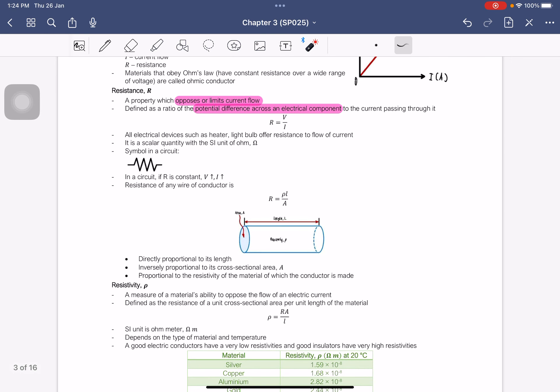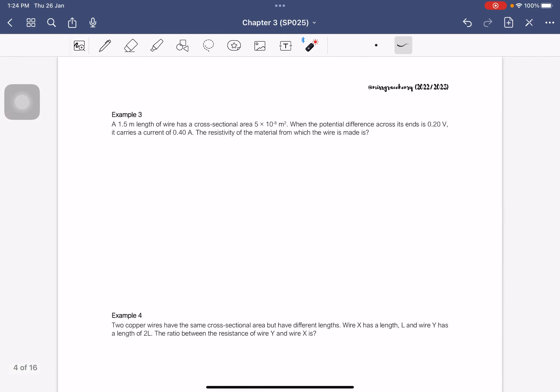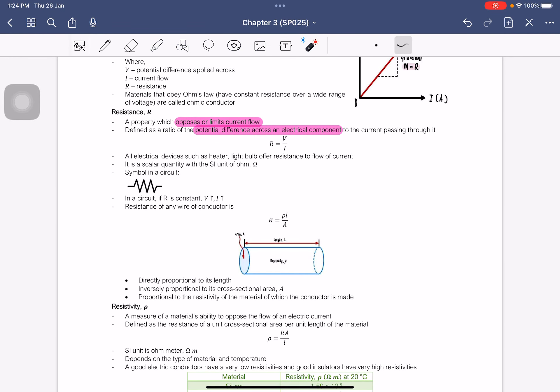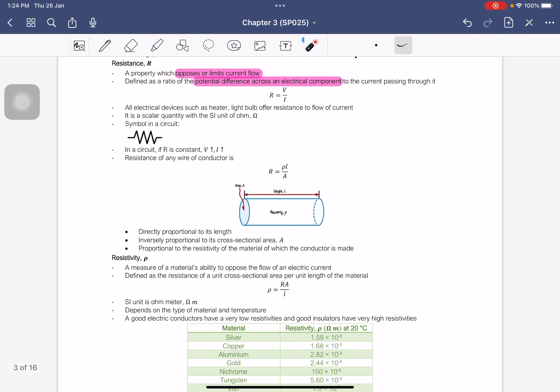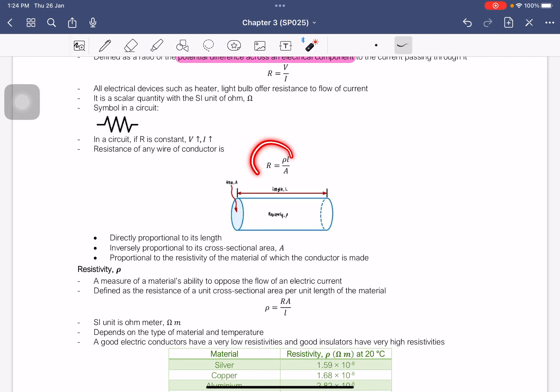So resistance of any wire or conductor is this one here. What this equation is telling you is the resistance is directly proportional to its length. And then it is inversely proportional to the area. So I didn't tell you what is L, what is A, but you should know this is length, this is area.